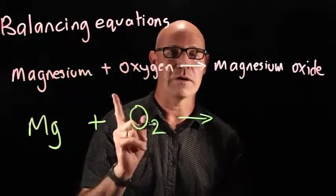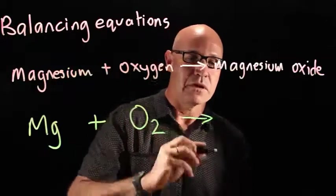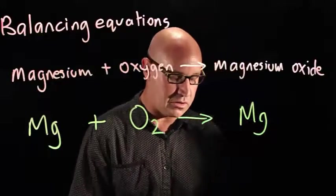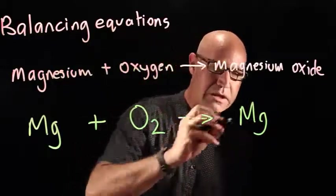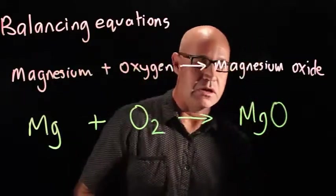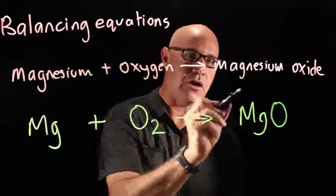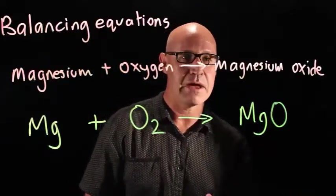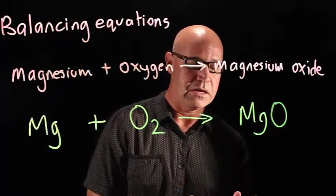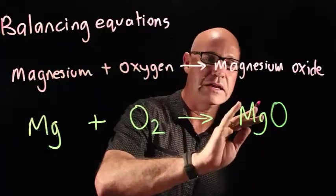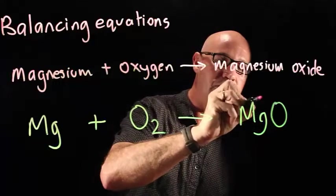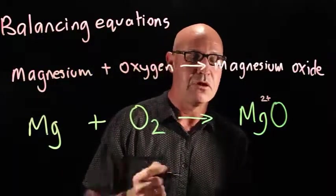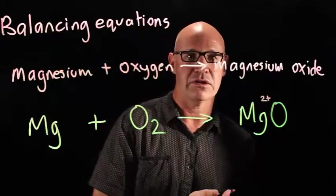On this side we've got one product, and we need to write this as the right formula. Now this is an ionic formula, so you need to go back and remember how we do our crossing over. Magnesium is 2+, and we remember that from looking at our periodic table or knowing that it's got two electrons in its outer shell.